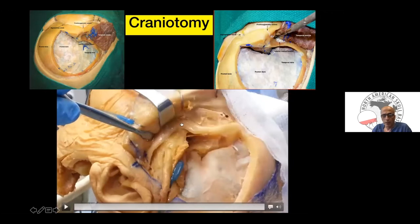This is the final exposure of the zygomatic bone: root of the zygoma, malar eminence, frontozygomatic suture, superorbital bar, frontal region, and temporal region.